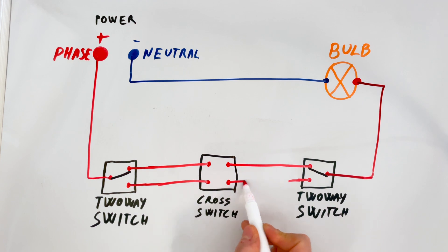Then, we connect the output terminals of the cross switch to the second two-way switch. Now, let's understand how it works.